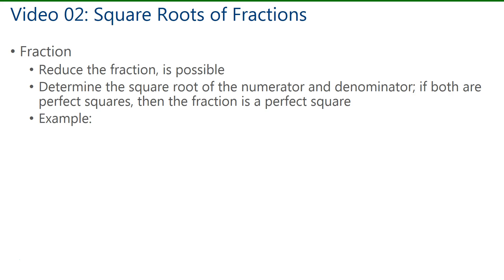An example of a fraction that's a perfect square would be 9 over 16, since 9 is a perfect square and 16 is as well. To find the square root of that we just need to find the square root of the numerator and square root of the denominator. The square root of 9 is 3 and square root of 16 is 4.